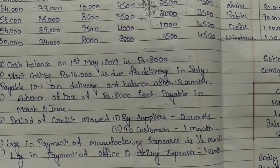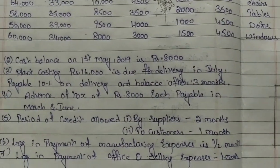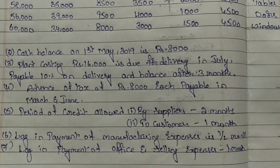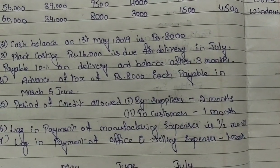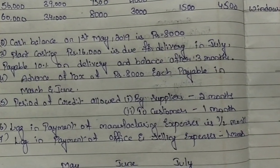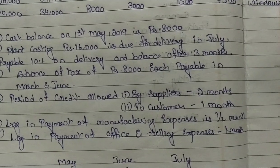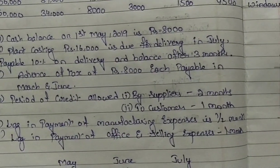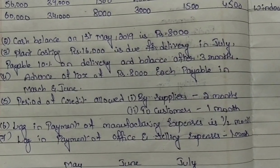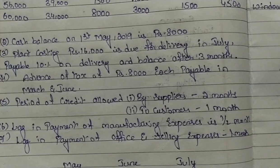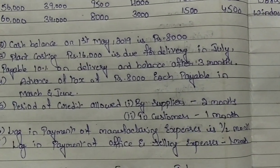The second point gives the cash balance on 1st May 2019 as rupees 8,000 — this is the opening balance for May. For the remaining months you calculate it from the budget. The third point: a plant costing rupees 16,000 is due for delivery in July, payable 10% on delivery and the balance after three months — so 1,600 is paid in July. The fourth point: advance tax of 8,000 each is payable in March and June. Since we are preparing the budget only for May, June, and July, the March tax is not considered.